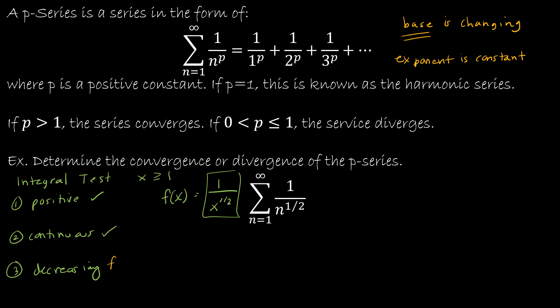Is it decreasing? Well, this one I have to do a little bit of work. I have to find f prime of x. So if f of x is x to the negative 1 half, f prime of x is negative 1 half x to the negative 3 halves, which is always going to be less than 0 because it's negative. And so therefore, yes, it meets all of these conditions.